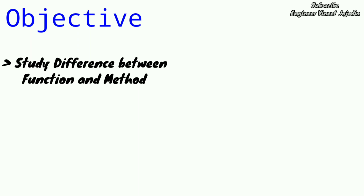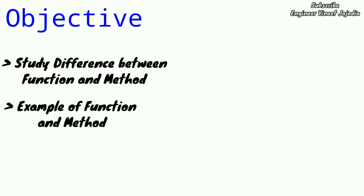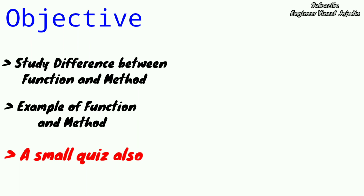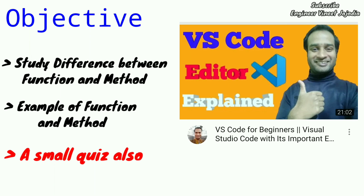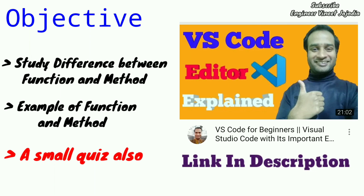The objective of this video is to see the difference between function and method, and see examples of how they differ from each other. For demonstration purposes, we are going to use VS Code editor and JavaScript language. If you are unfamiliar with VS Code editor, you can watch the video called 'VS Code for Beginners' — the link is in the description, and you can also click the 'i' button.